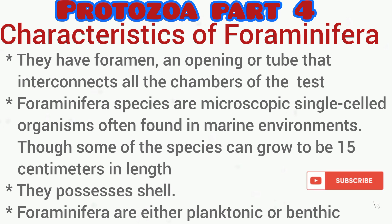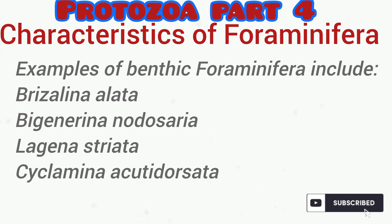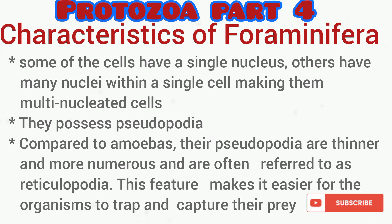Examples of planktonic foraminiferans include Heterohelix globulosa, while examples of benthic foraminiferans include Discospirina alata and others. Some foraminiferal cells possess a single nucleus and are uninucleated, while others possess numerous nuclei and are regarded as multinucleated. They also possess pseudopodia — the kind foraminiferans possess are thinner and numerous, regarded as reticulopodia, which help them trap and capture their prey.